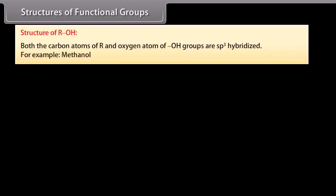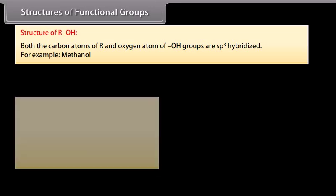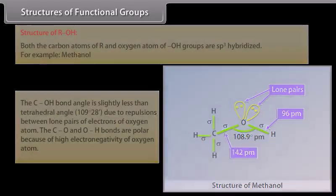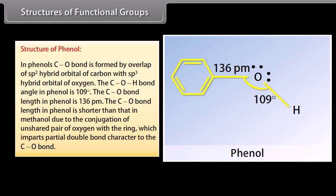Structure of R-OH: both the carbon atoms of the alkyl group and the oxygen atom of the hydroxyl group are sp3 hybridized. For example, methanol. The C-O-H bond angle is slightly less than the tetrahedral angle of 109°28' due to repulsions between lone pairs of electrons on the oxygen atom. The C-O and O-H bonds are polar because of the high electronegativity of the oxygen atom. In phenols, the C-O bond is formed by overlap of sp2 hybrid orbital of carbon with sp3 hybrid orbital of oxygen. The C-O-H bond angle in phenol is 109°. The C-O bond length in phenol is 136 picometers, shorter than in methanol, due to conjugation of the unshared pair of oxygen with the ring, which imparts partial double bond character to the C-O bond.